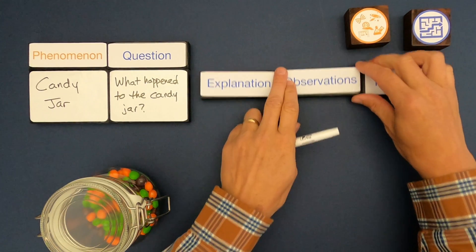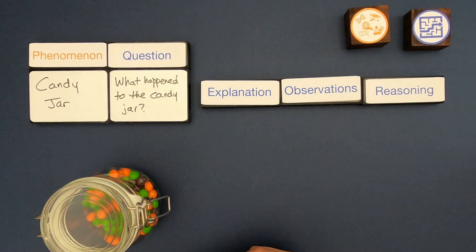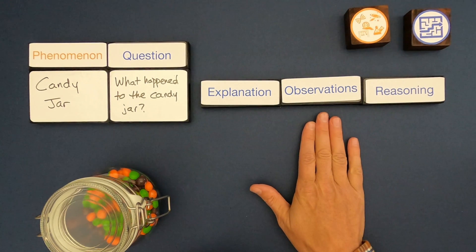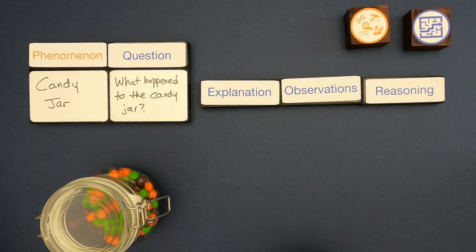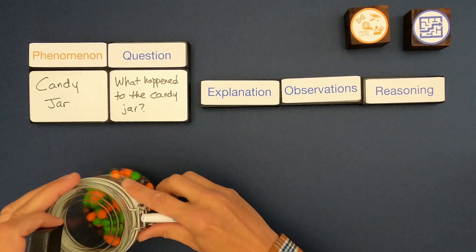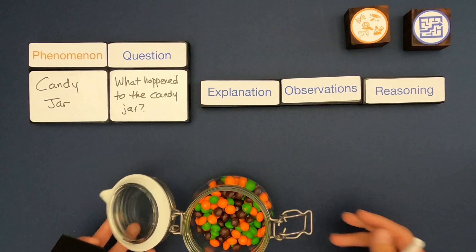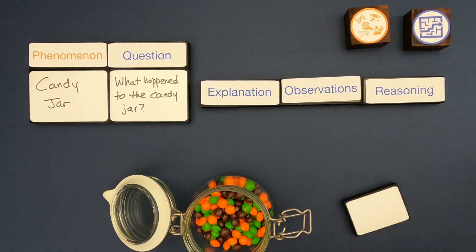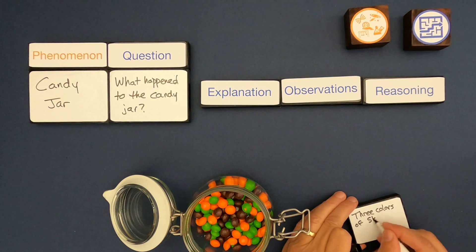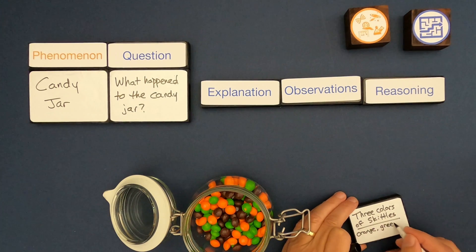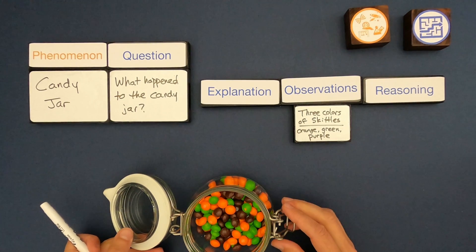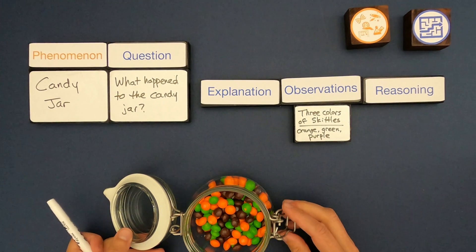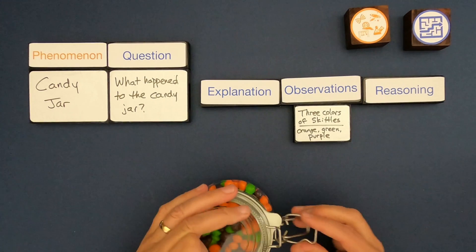For some of you, you don't even know what's going on with the candy jar. So we always start with the observations — we always start with the evidence before we go to the explanation. I'm going to start writing down some observations as we look at the Skittles in the candy jar. My first observation is that there are three colors of Skittles found in the candy jar: orange, green, and purple.